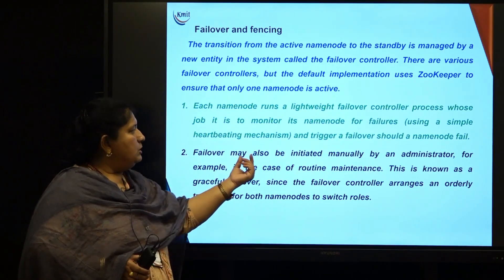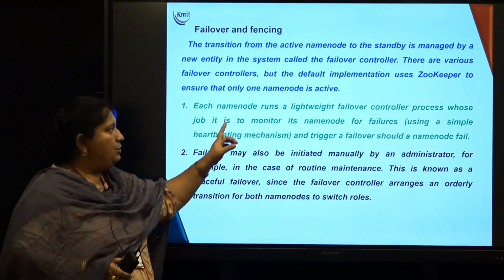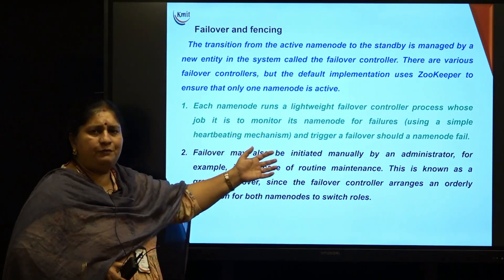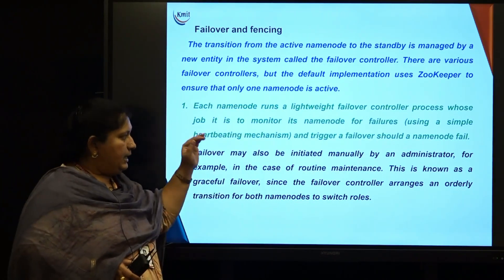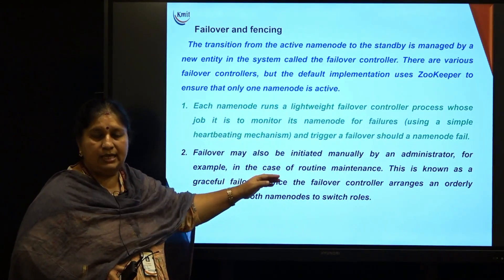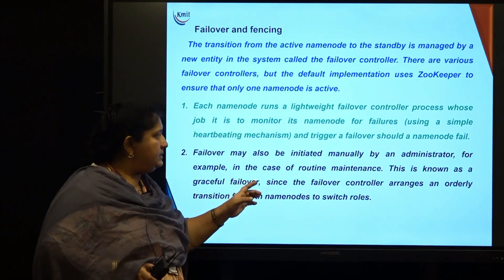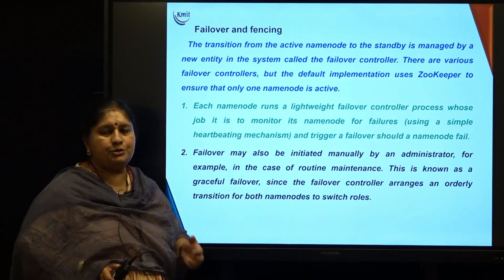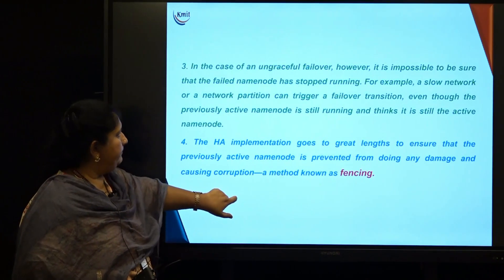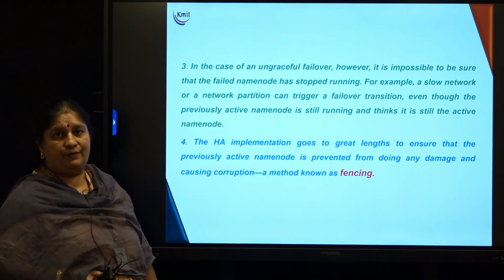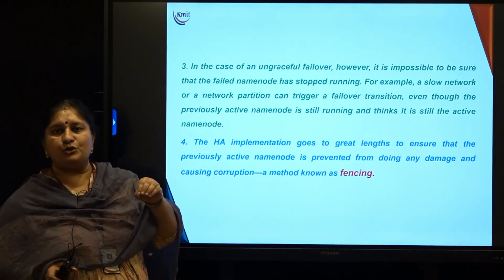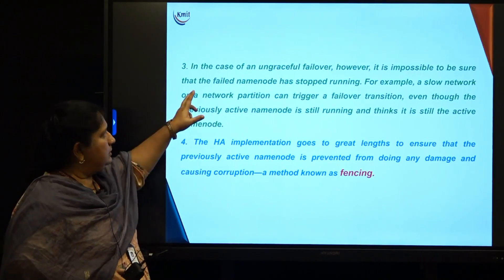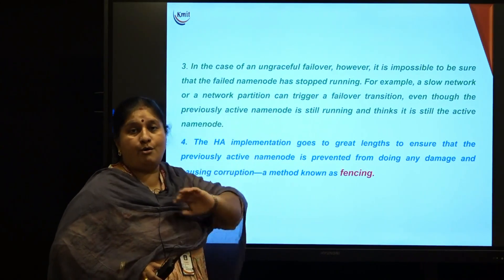The failover may also be initiated manually by an administrator as part of routine maintenance. Whenever the administrator starts a failover controller, that means stopping the name node for a while — this is called a graceful failover. The failover controller then automatically arranges to start the standby. In case of an ungraceful failover — meaning the name node has failed for some reason, not stopped for maintenance — we need to check whether the failed name node has actually stopped.